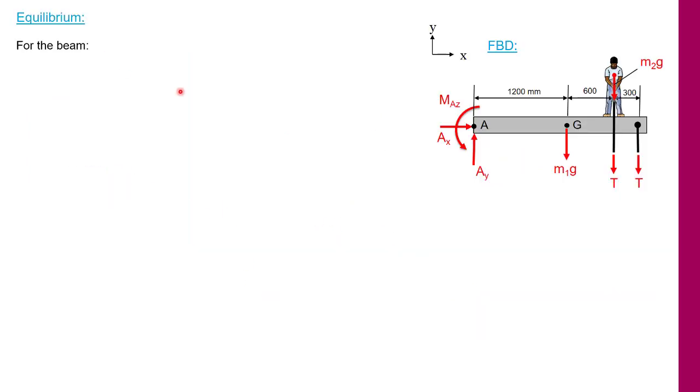First I will look at sum of the forces in the x direction, and I'll use the right direction as my positive reference. Here we see that our only force in the x direction is the horizontal reaction force Ax that is possible at the built-in condition. But because we have no other external forces in the horizontal direction, that is zero.